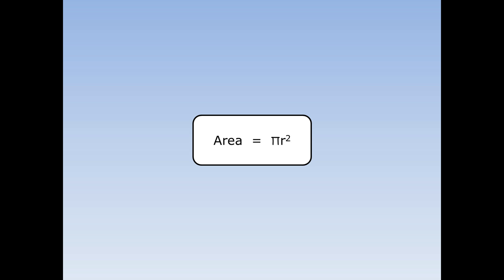The area of a circle is pi r squared, where pi is 3.14, and r squared means the radius times the radius.